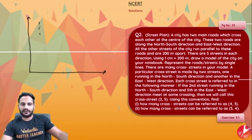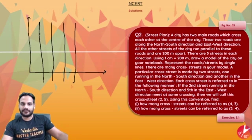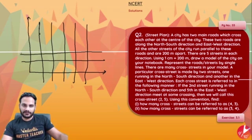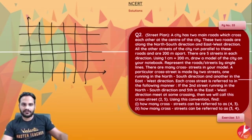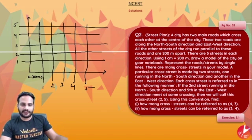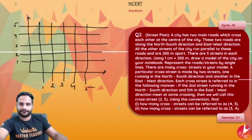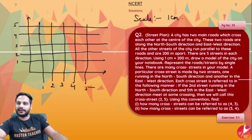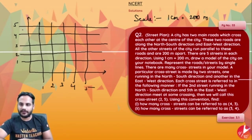There are five streets in each direction. So these are street 1, street 2, street 3, street 4, street 5 on one side. Similarly on the other side, street 1, street 2, street 3, street 4, street 5. This is the model of the city. Each of them are 200 metres apart. You can write the scale of this graph as: 1 centimetre is equal to 200 metres.